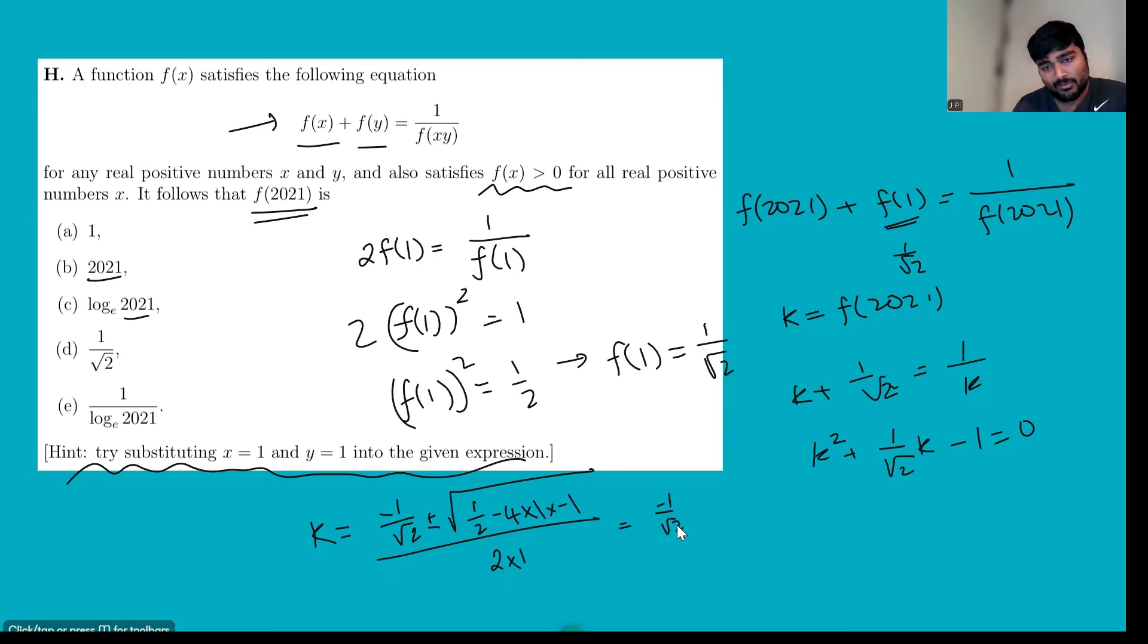Minus 1 over root 2 is minus 1 over root 2. What do we have inside the square root? Well, it's half plus 4, so that's 4.5 or 9 over 2. And if we square root that, the 9 is going to square root to 3, so it's going to be minus 1 over root 2 plus or minus 3 over root 2 all over 2.